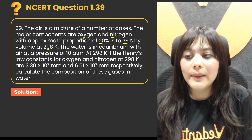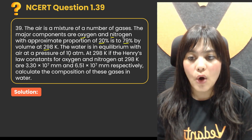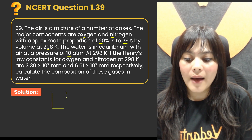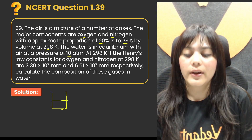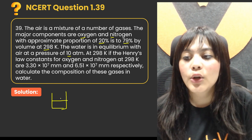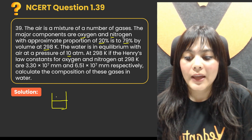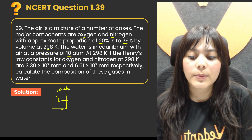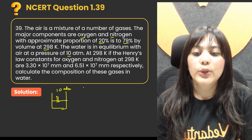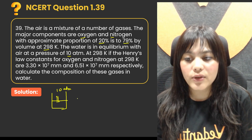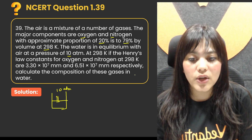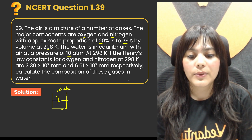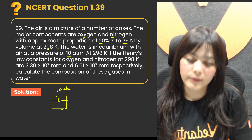The water is in equilibrium with air at a pressure of 10 atmospheres at 298 Kelvin. If the Henry's law constants for oxygen and nitrogen are given respectively, we need to calculate the composition of these gases dissolved in water.